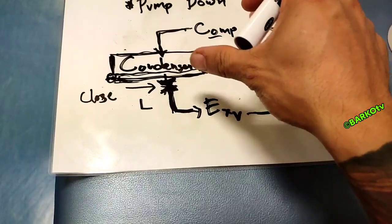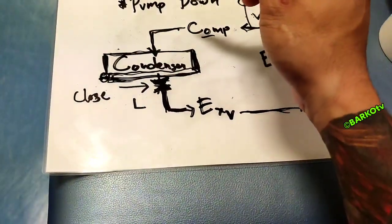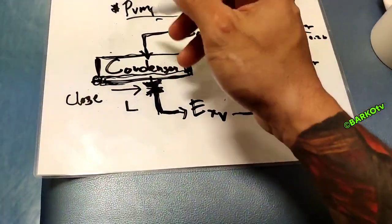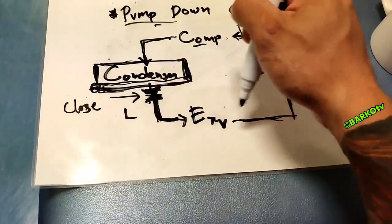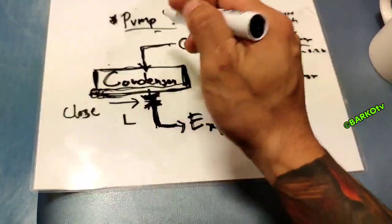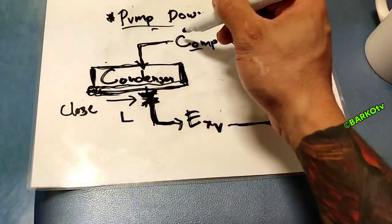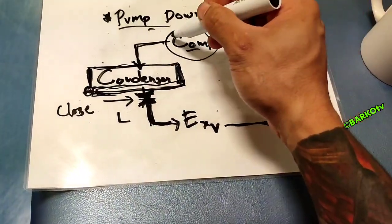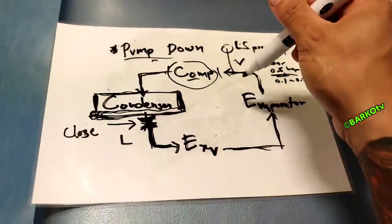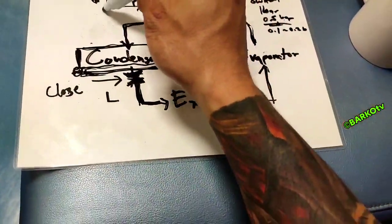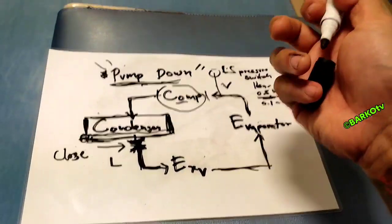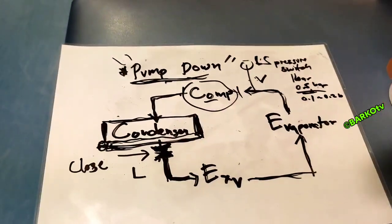This is the manual pumping down procedure when you have maintenance on your compressor. After pumping down, you close the suction and discharge valves on your compressor. Then if you plan to change the oil, you drain all the oil and clean the compressor.